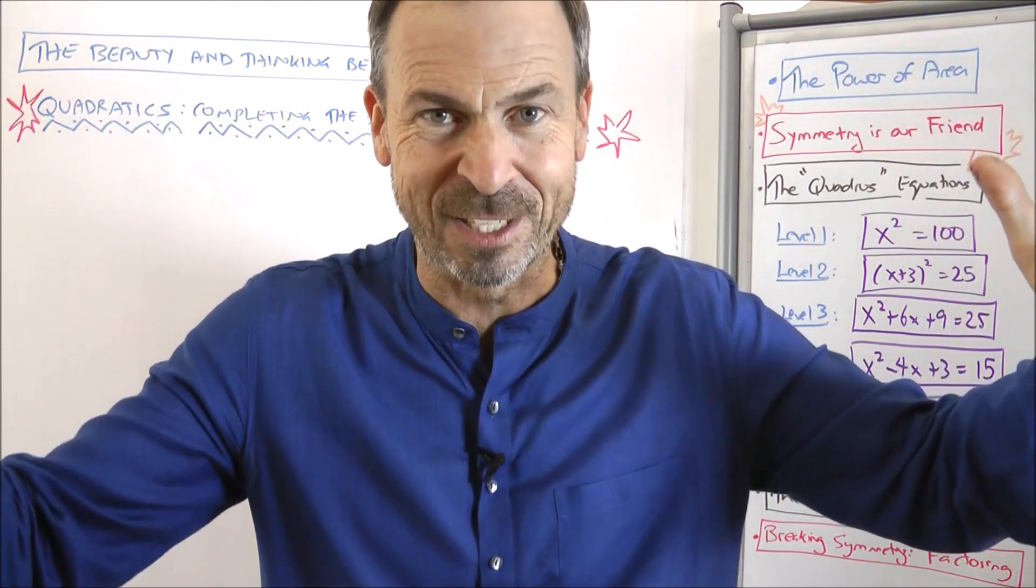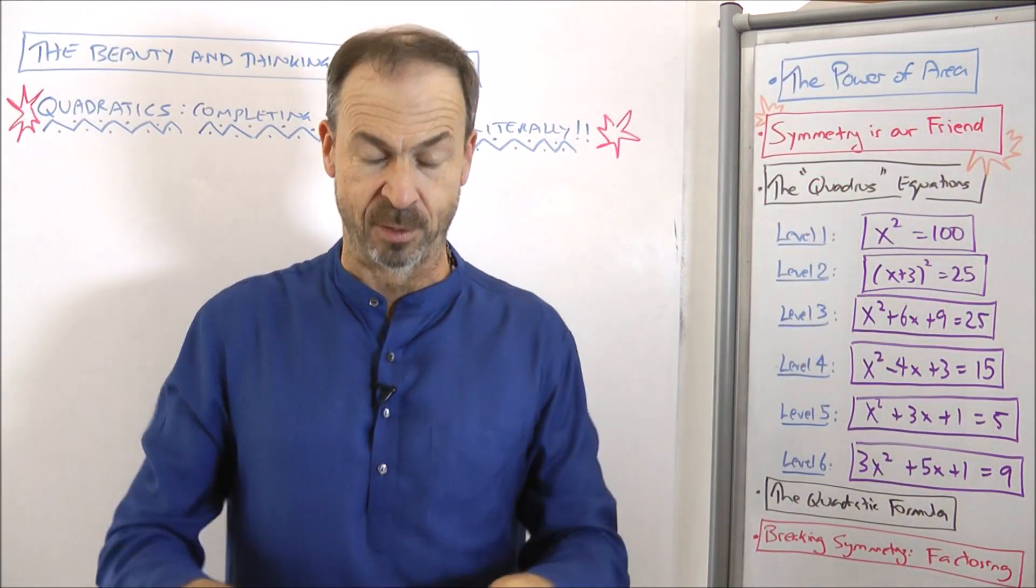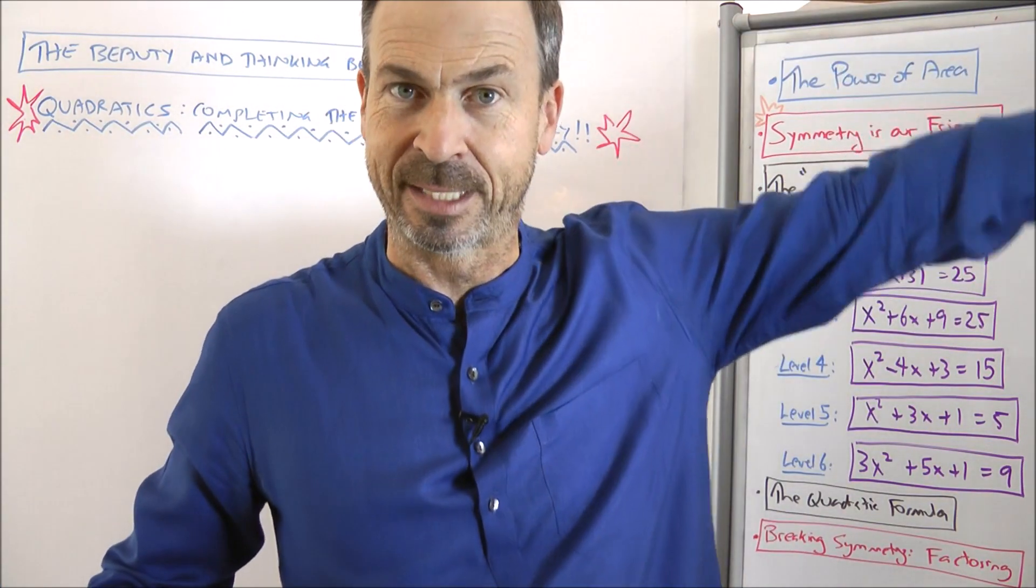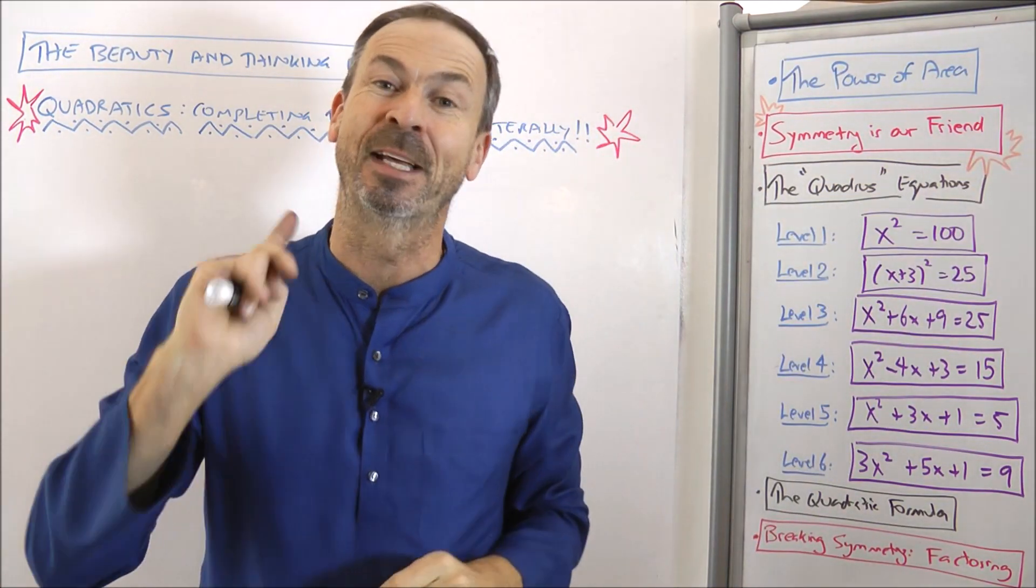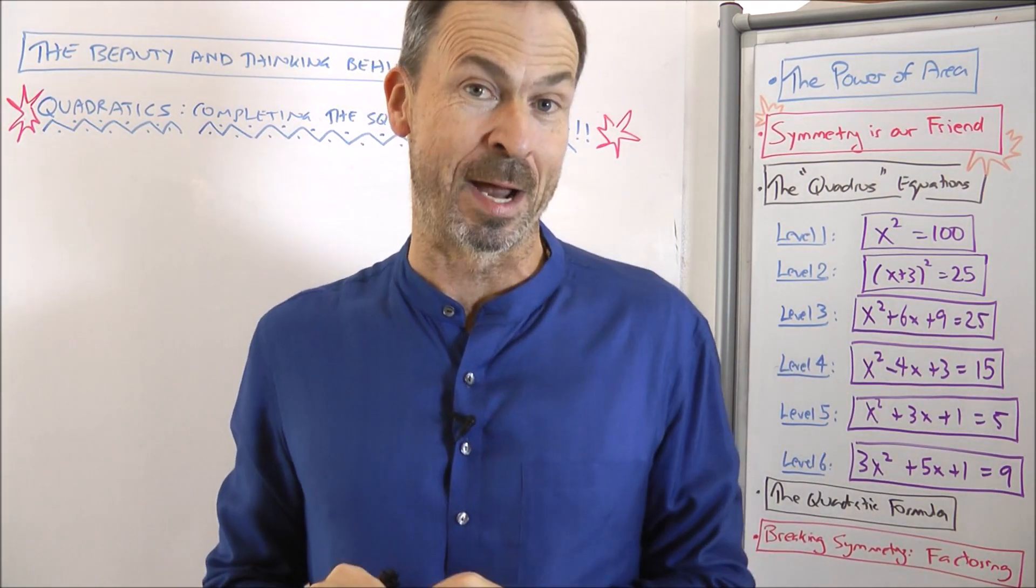The prefix quad in everyday language still means four, like a quadrilateral is a figure with four sides. A quadrangle is a region that would have four angles. So quad means four, but it comes from the word quadris, meaning equations that can be solved by the square method.